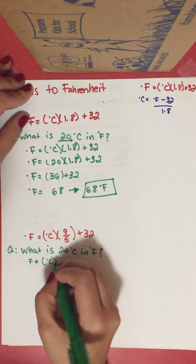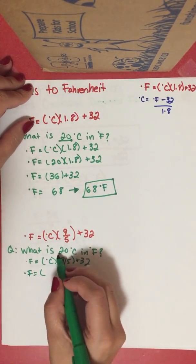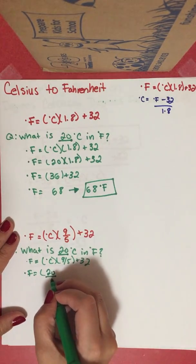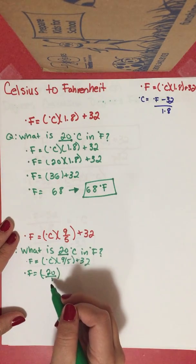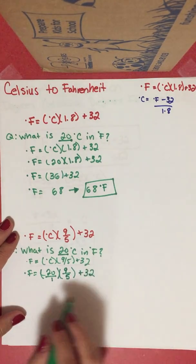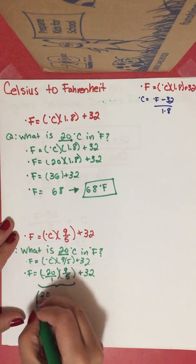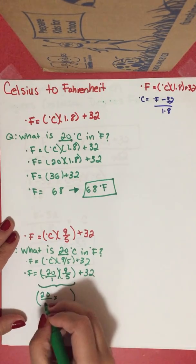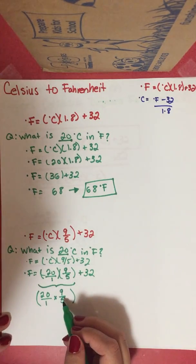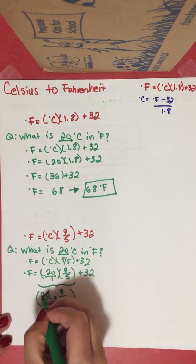Degrees Fahrenheit equals degrees Celsius times 9/5 plus 32. Again we're only plugging in the number, so degrees Fahrenheit equals 20 over 1 times 9 over 5, plus 32. The best part about using fractions is that we can simplify: 5 and 20 have 5 in common, so 5 divided by 5 is 1 and 20 divided by 5 is 4.